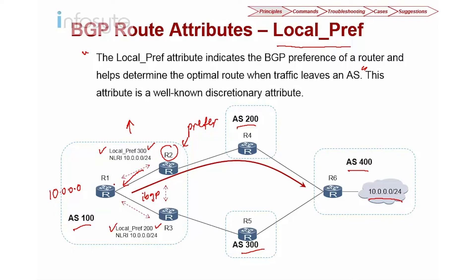Local preference is used to influence routers to go outbound and exit from your AS. By default, if you have not configured any policy, the local preference will always be 100. Also remember that local preference is a well-known discretionary attribute — meaning all routers regardless of vendor need to support it, but they do not need to advertise it in the update.